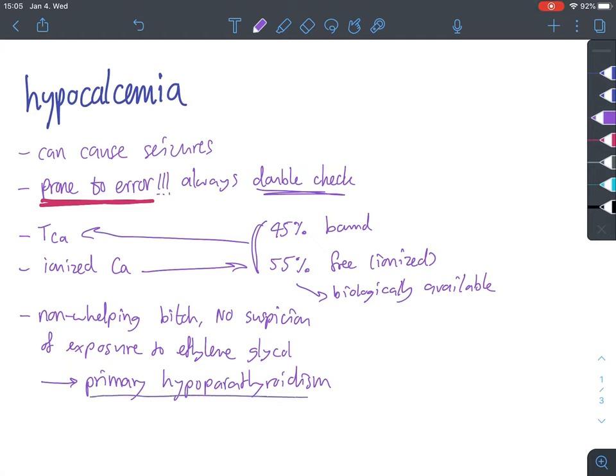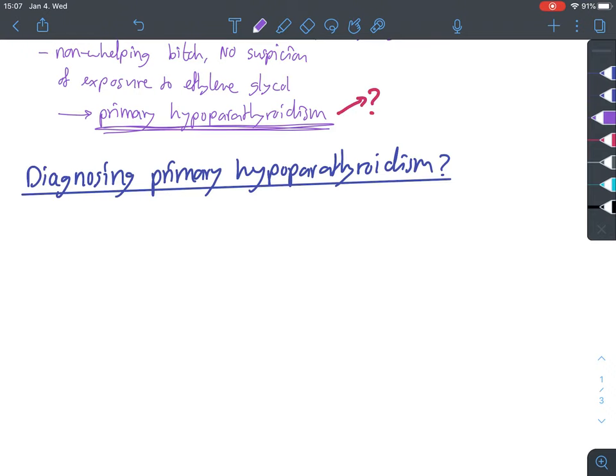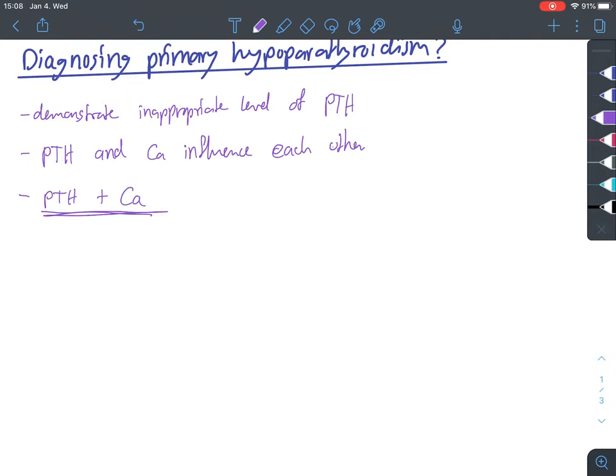So, how would we be able to diagnose or rule out primary hypoparathyroidism? To do this, we need to demonstrate an inappropriate level of parathyroid hormone. However, parathyroid hormone and calcium influence each other in a healthy animal. So, to be able to diagnose this, we always need to measure them together at a time where we know calcium is abnormal. So, we're going to take a new measurement of calcium and then as well of parathyroid hormone and we are going to look at these results together. These two substances have the following relationship in the body.